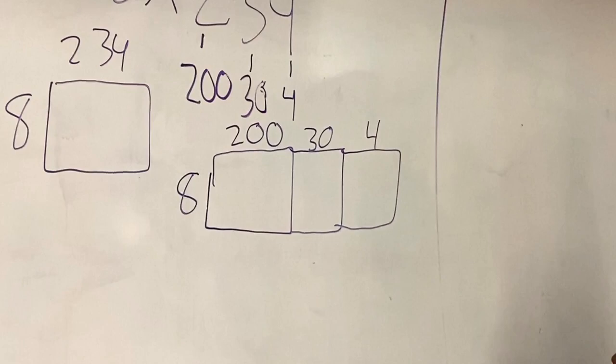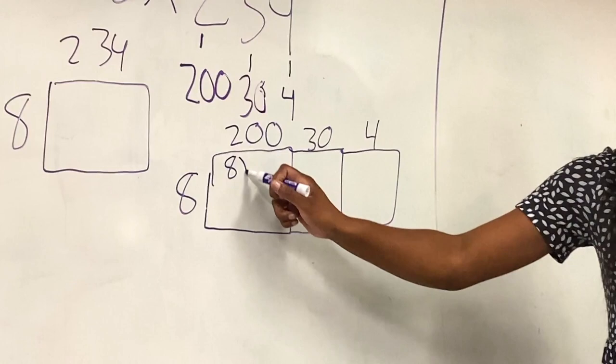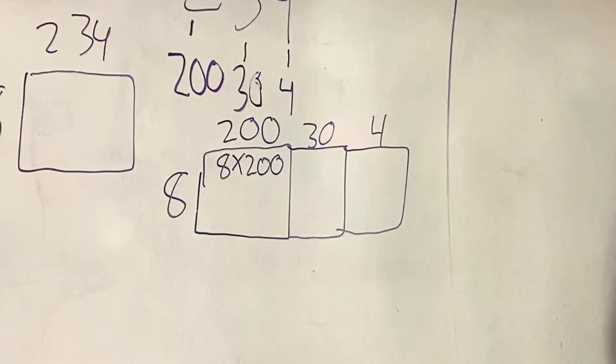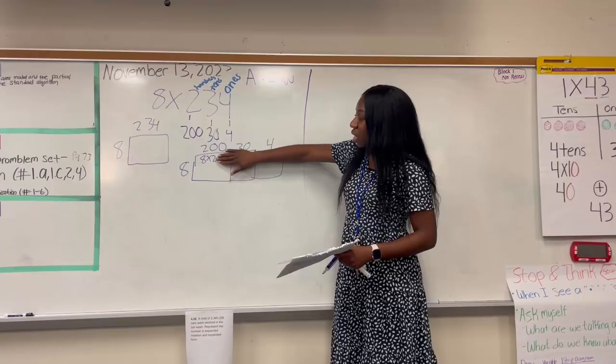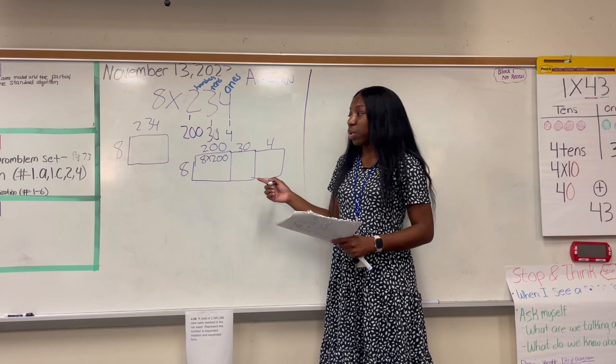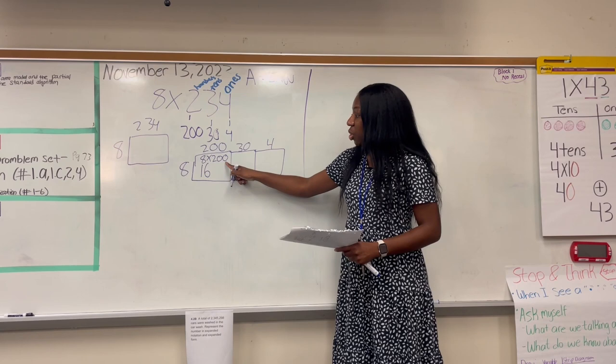So beginning with the first one, let's go ahead and do eight times 200. Now for eight times 200, if you don't know how to do that, and it's just too big for you to solve, you can always cover up the zeros and do eight times two.